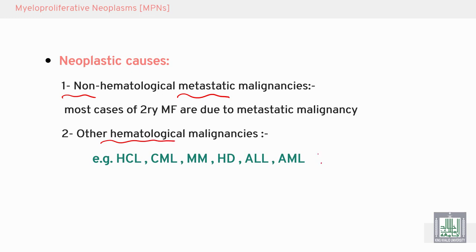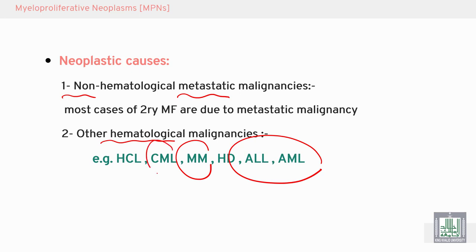Other hematological malignancies that may cause myelofibrosis include leukemia (AML and ALL), lymphoma, Hodgkin disease, multiple myeloma, chronic myeloid leukemia, and hairy cell leukemia. All of these may lead to myelofibrosis and failure of production of normal blood cells.